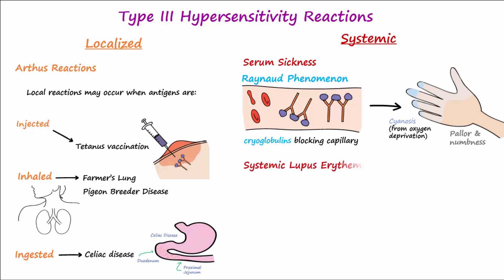Systemic Type 3 hypersensitivity reactions can also be seen in autoimmune diseases like lupus, where large numbers of immune complexes attach to the endothelium of blood vessel walls, causing vasculitis.